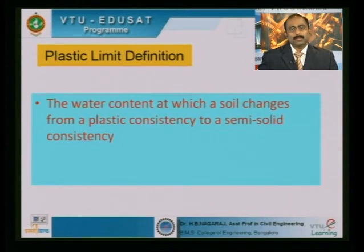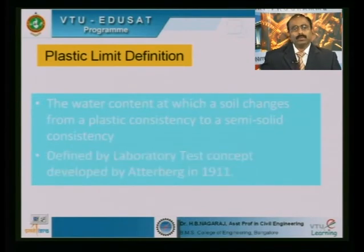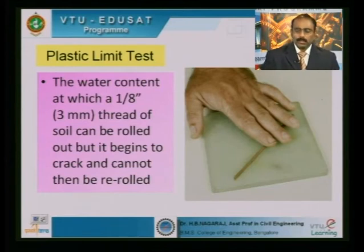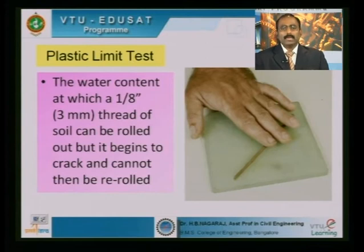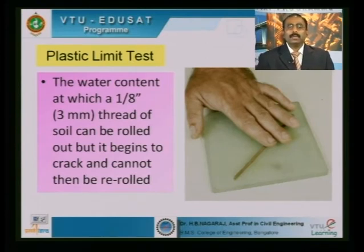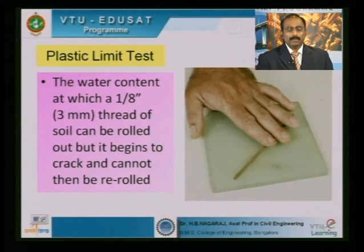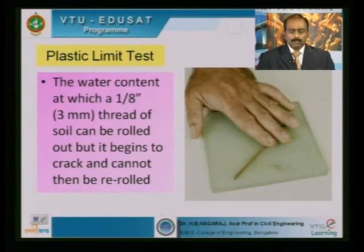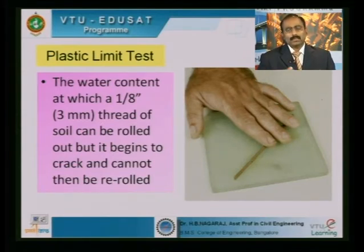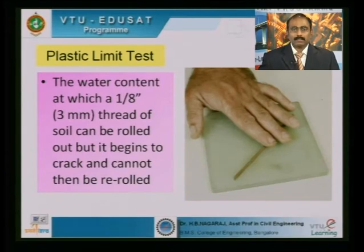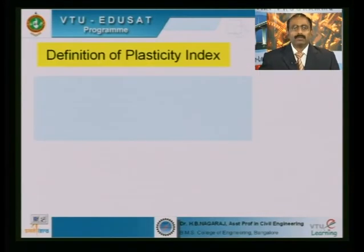The water content at which a soil changes from plastic consistency to semi-solid consistency is called the plastic limit. To determine it, we take a soil paste drier than for liquid limit and roll it into a thread. When we can get a 3 mm diameter thread and the soil starts showing surface cracks — shrinkage or shear cracks — it has ceased to be a plastic material. The water content of those threads is the plastic limit.